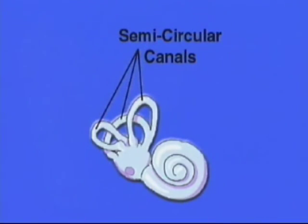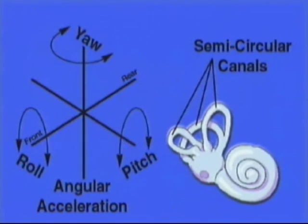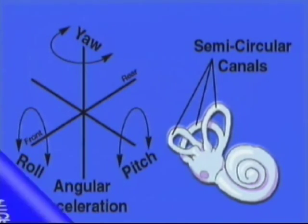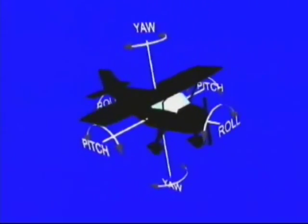Three half-circular interconnected tubes inside each ear comprise the semicircular canals. The semicircular canals of both inner ears monitor angular acceleration and sense rotation in three dimensions. The planes of the three canals in each ear correspond to the roll, pitch, or yaw motions of an aircraft.